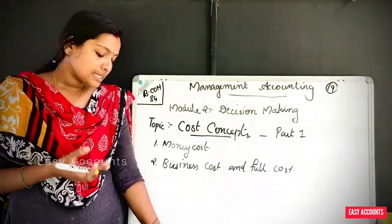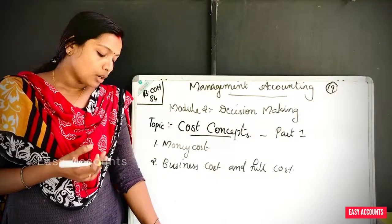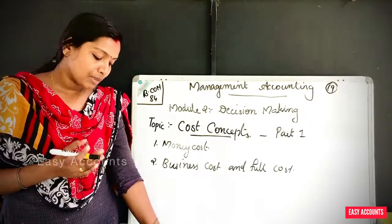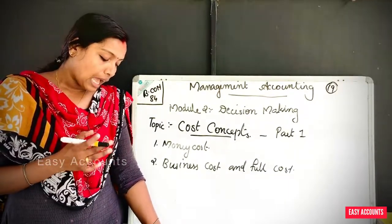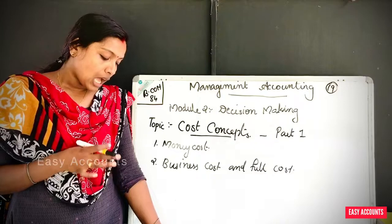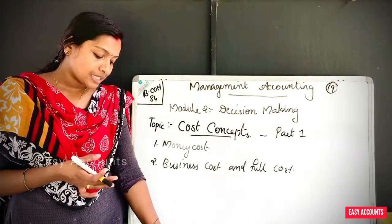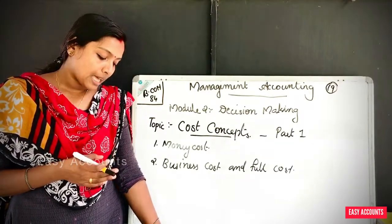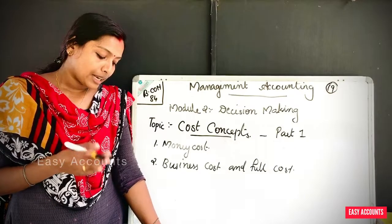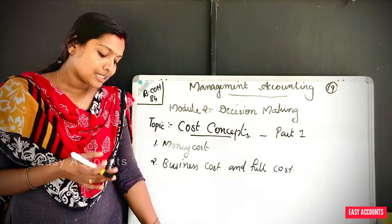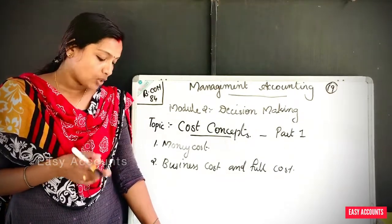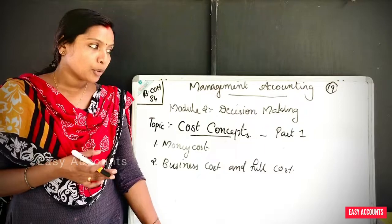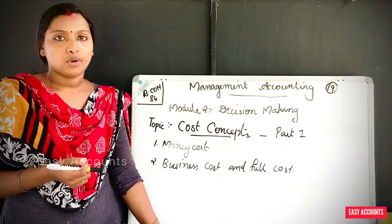Money Cost is the sum total of all payments made for the acquisition of material and labor and other expenses like fuel, lighting, salary, rent, rates, taxes, insurance, advertisement, etc. for producing a commodity.